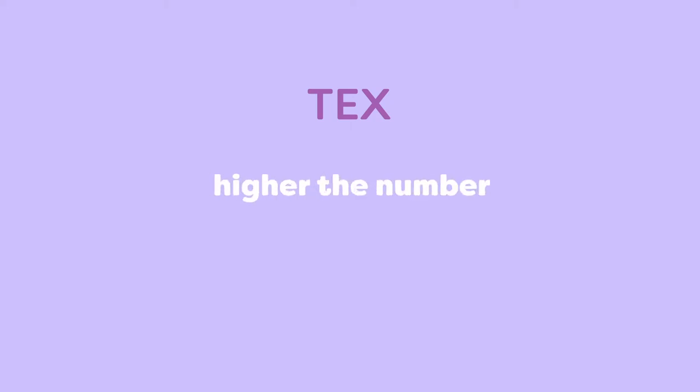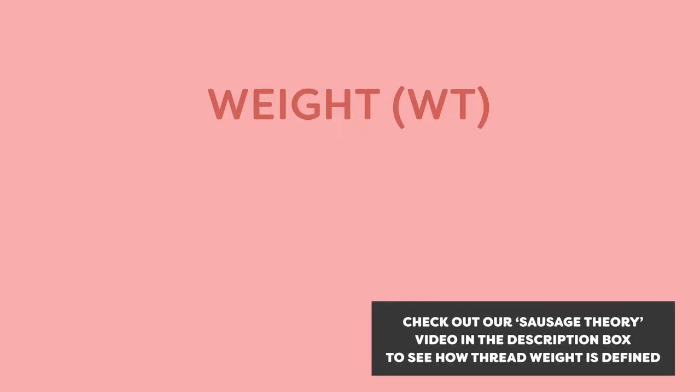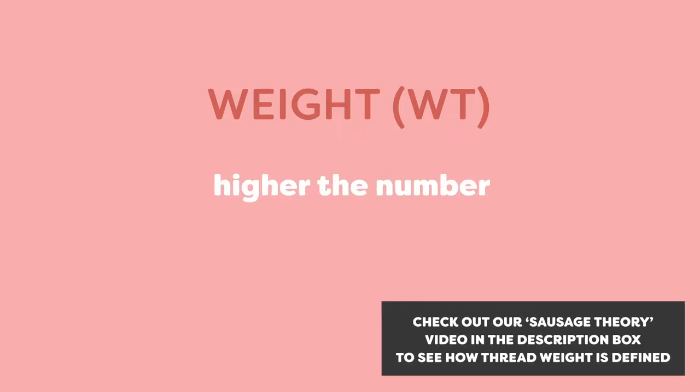With Tex, the higher the number, it usually results in a thicker thread. Whereas with weight, it's defined by the higher the number, the thinner the thread.